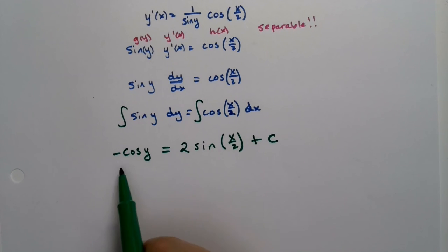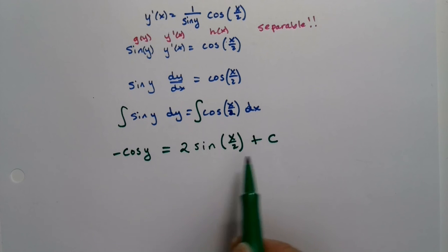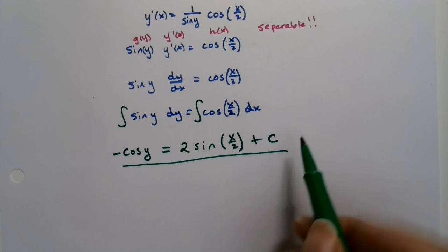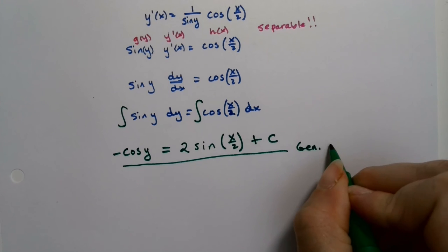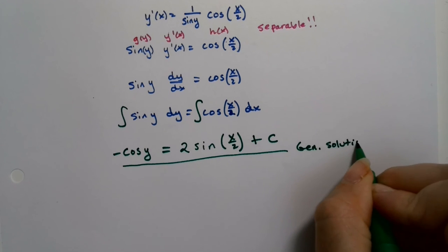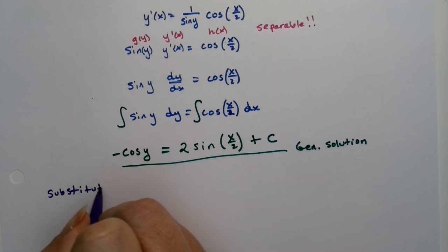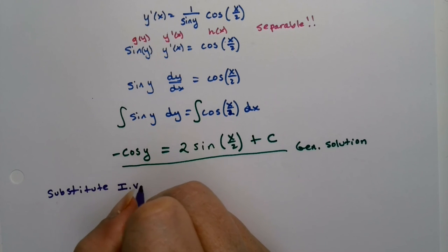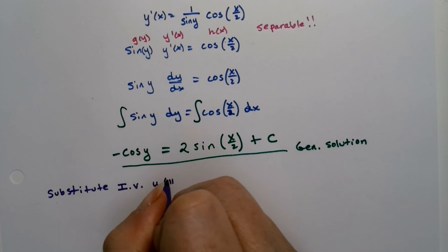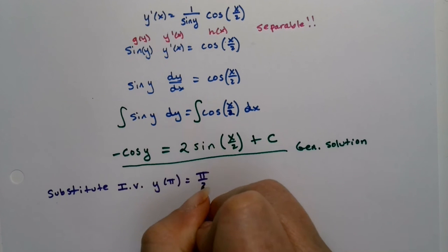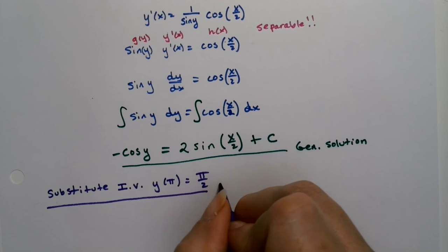All right, so then we know that that's true. That's a general solution right there. General solution. But now we want the particular solution. So to find the particular solution, we substitute in our initial value, which is y of π is equal to π over 2, and solve for c.